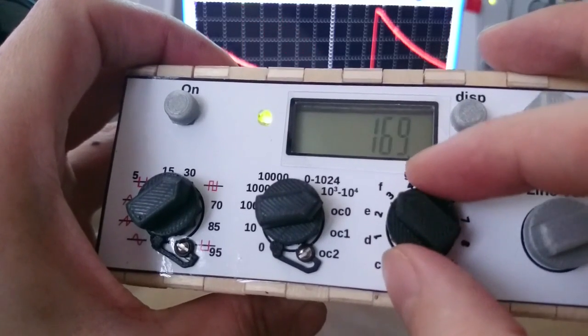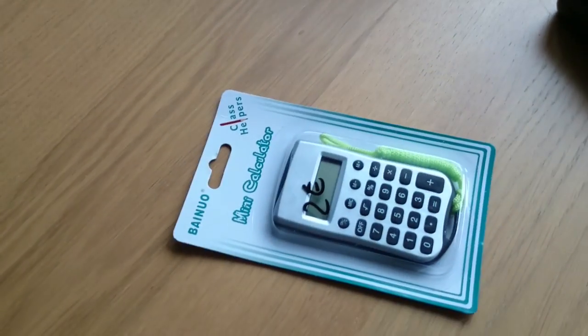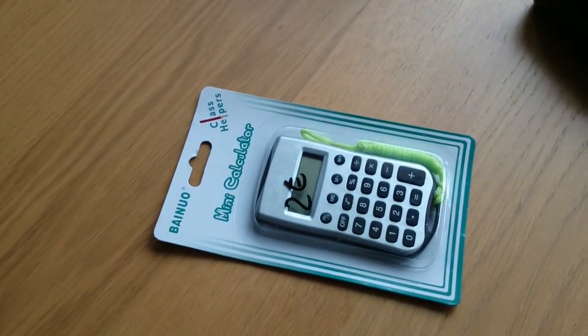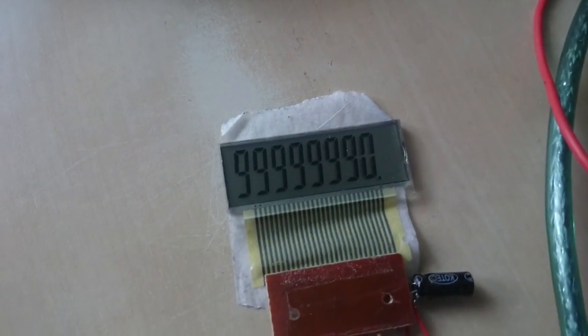A display shows the current frequency. This display is actually quite of a stupid hack itself, because I used the guts of a cheap calculator for it. You can see in my previous video how I have done that.